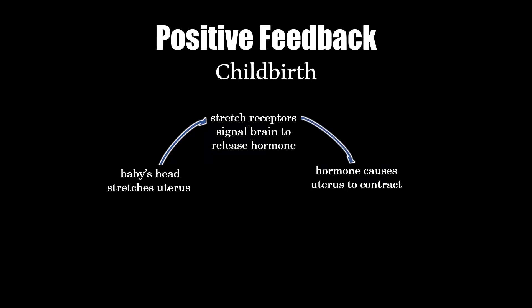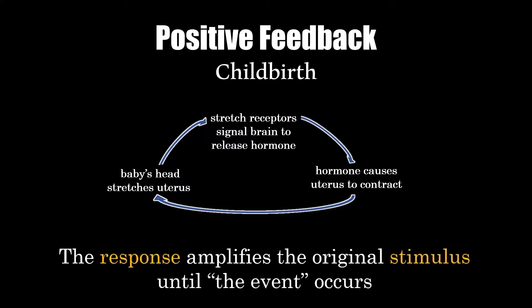The uterus contracting causes the baby to stretch out the uterus even farther, and this cycle continues with the uterus contractions getting stronger and stronger until the event occurs — the baby is born.